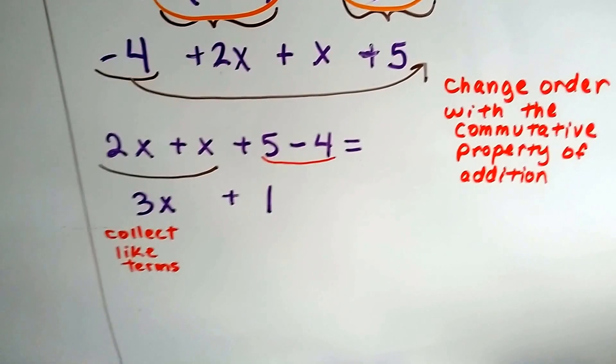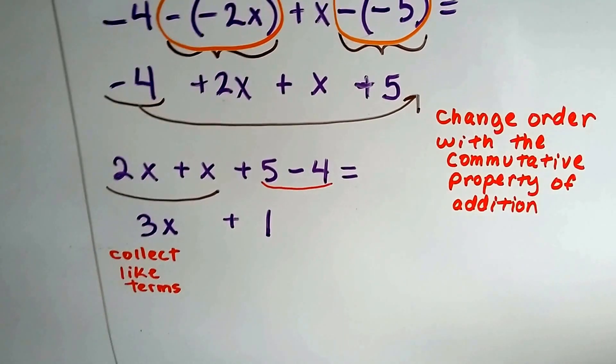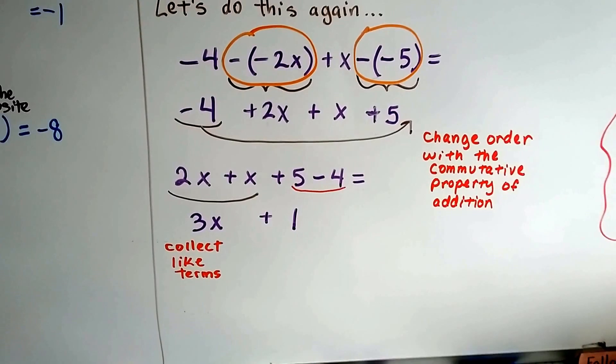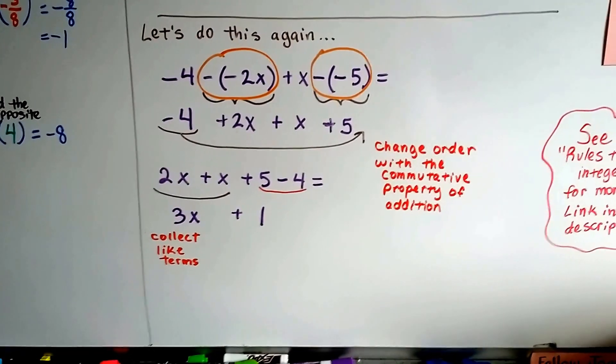Our answer is 3x plus 1. We can't solve it any further than that — that's as far as it goes, because we don't know what x is. So our answer is 3x plus 1.